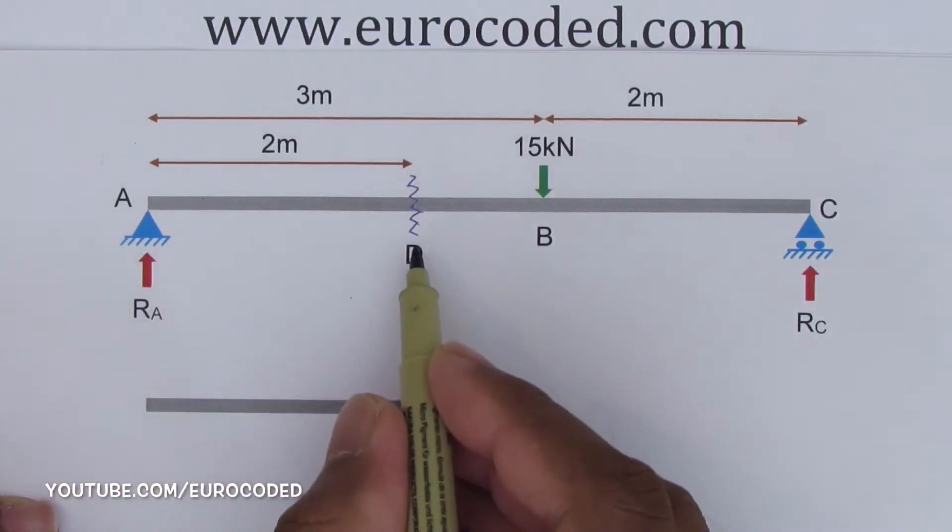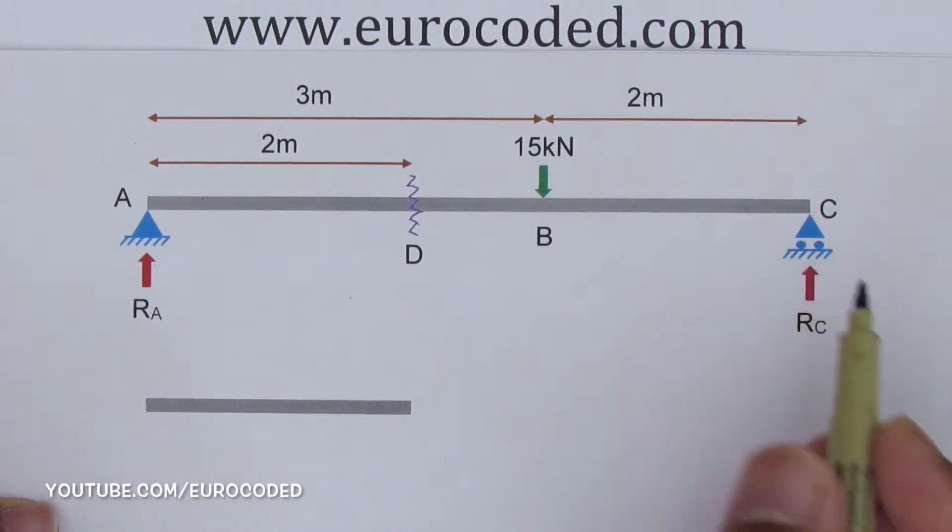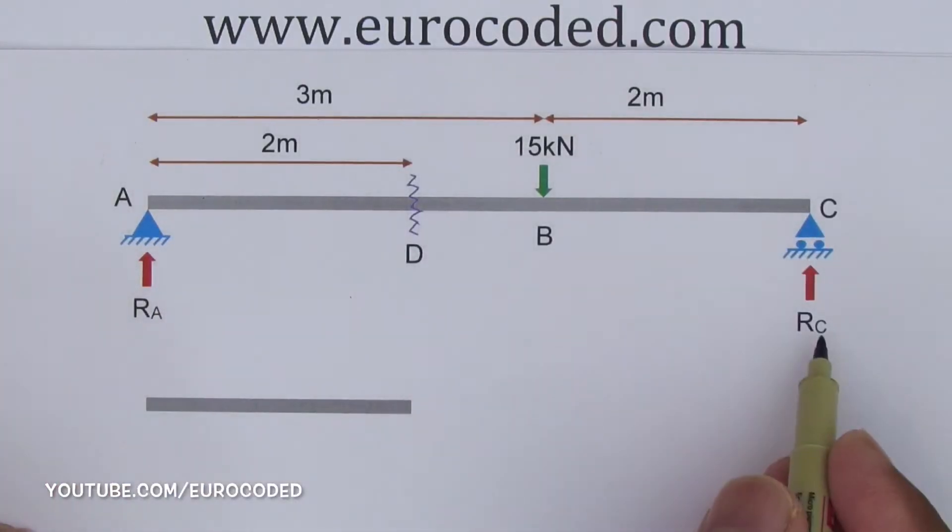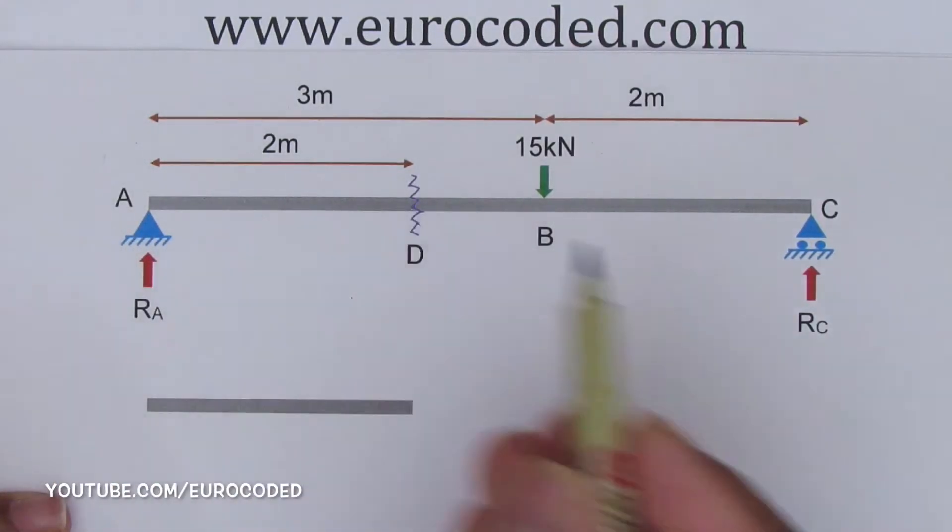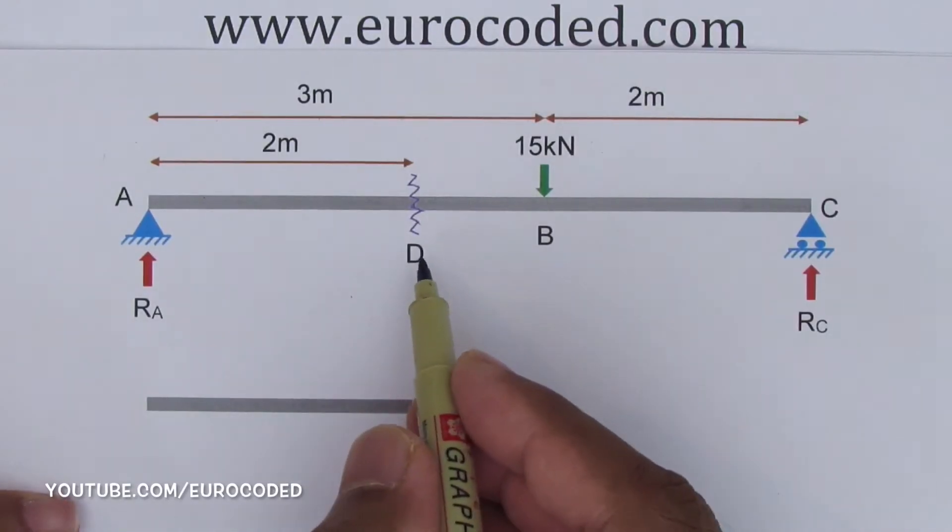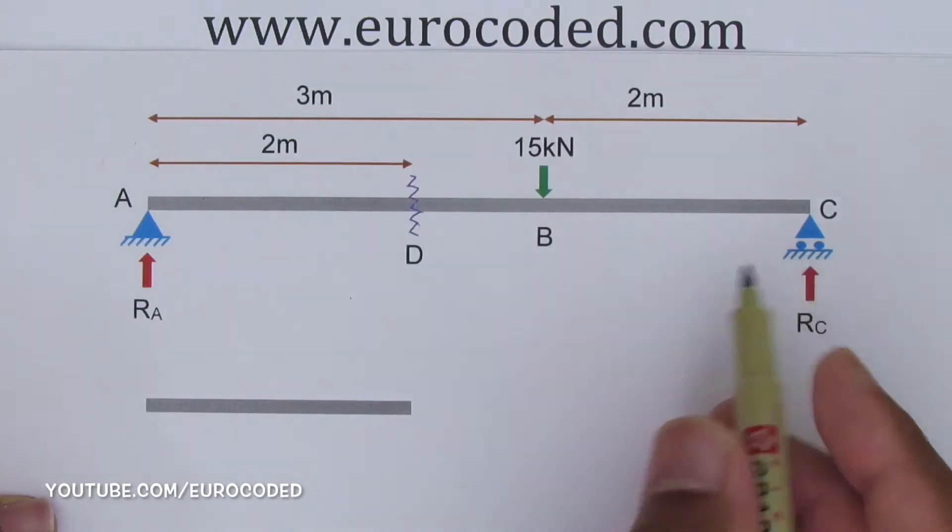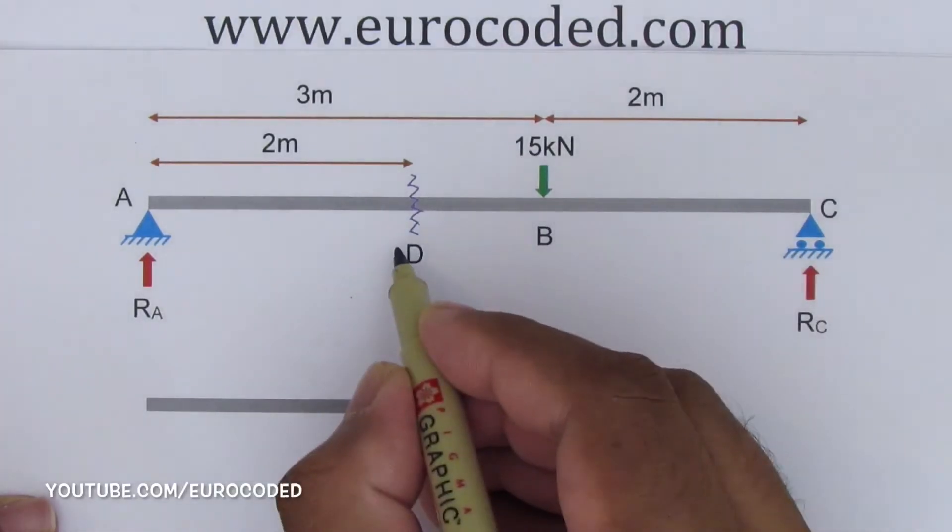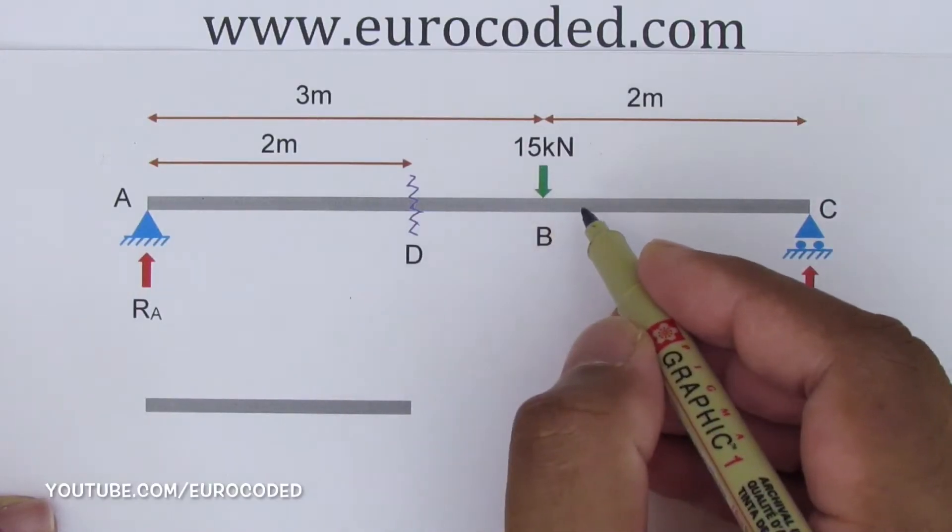Now we can isolate either of these two sections and draw a diagram as if it was separated from the rest of our beam arrangement. This process is called drawing a free body diagram. From these two sections, I'm going to pick section AD and draw the free body diagram. This is the easy section out of these two sections because this section doesn't have any externally applied forces. In fact, section DC has the externally applied force of 15 kN.